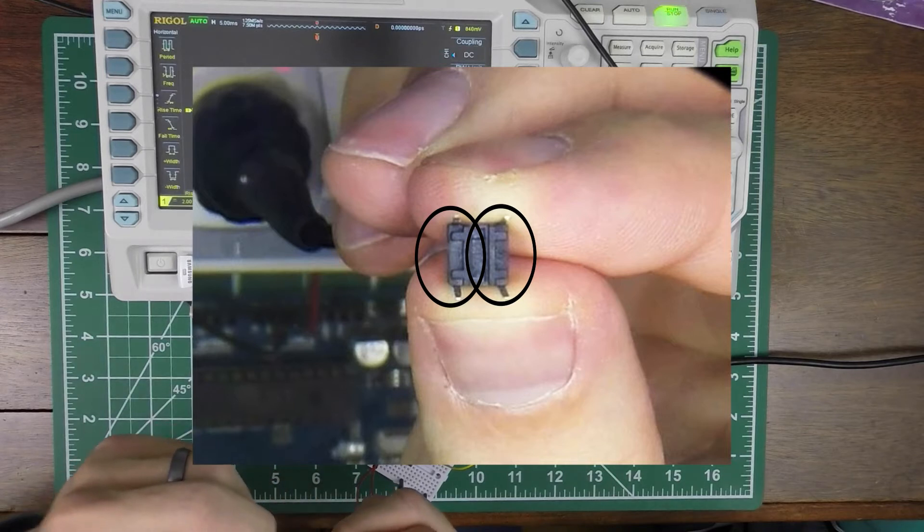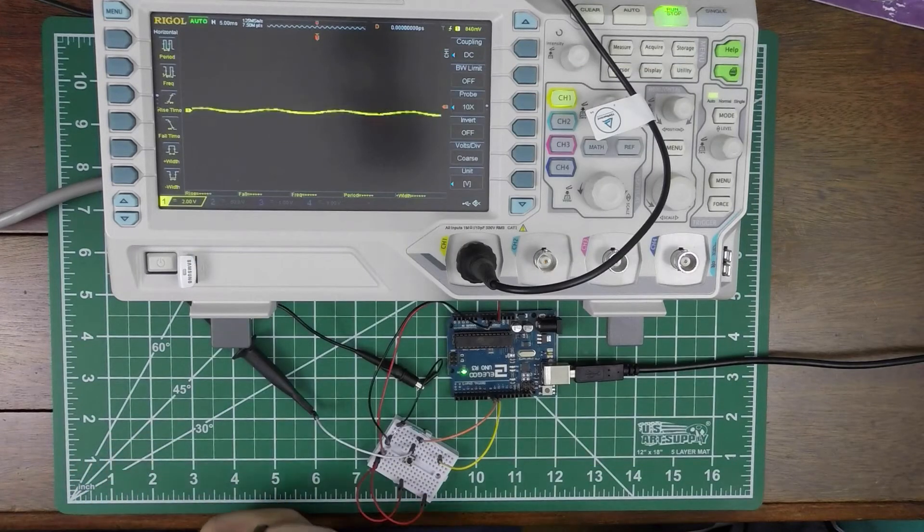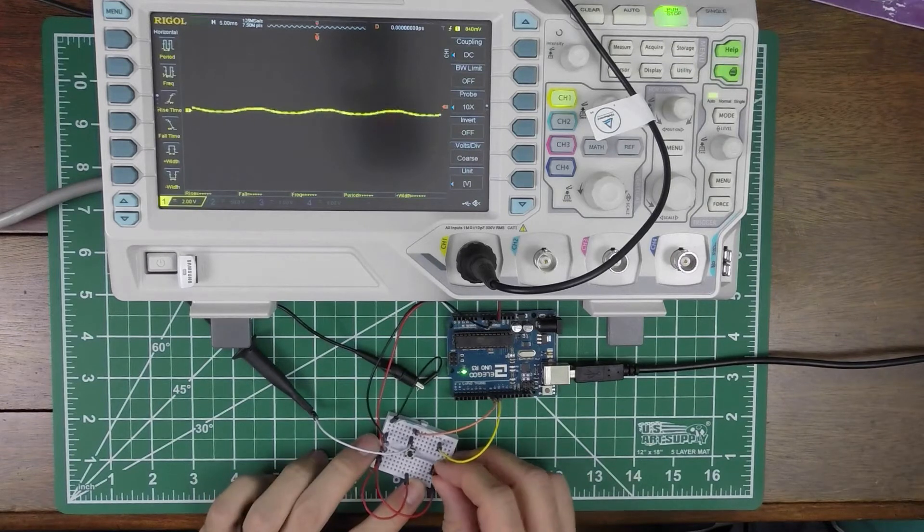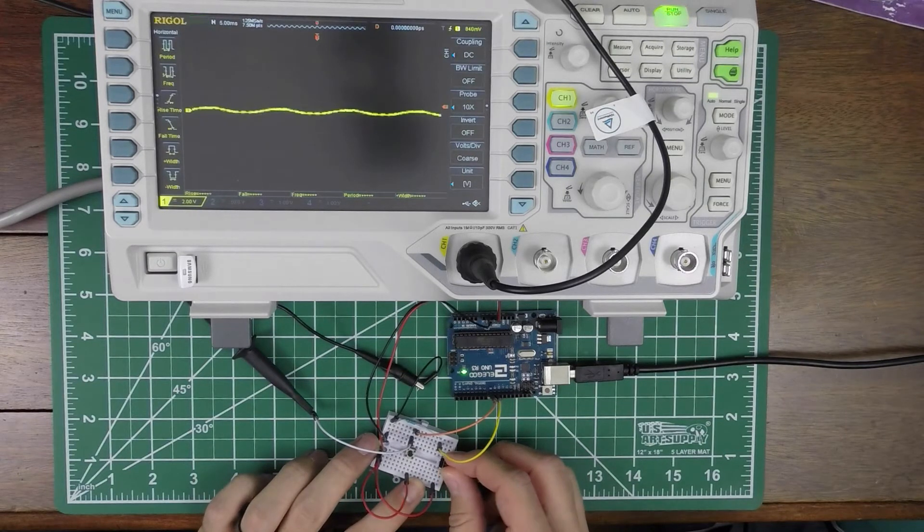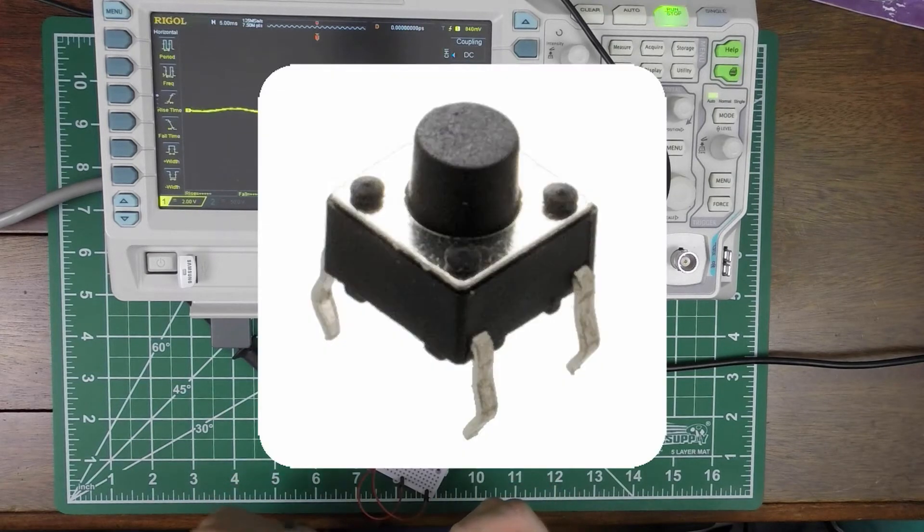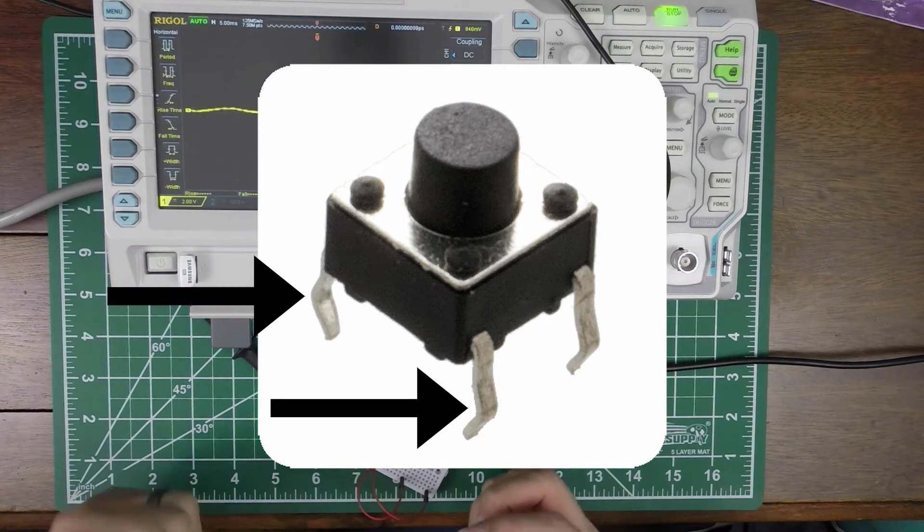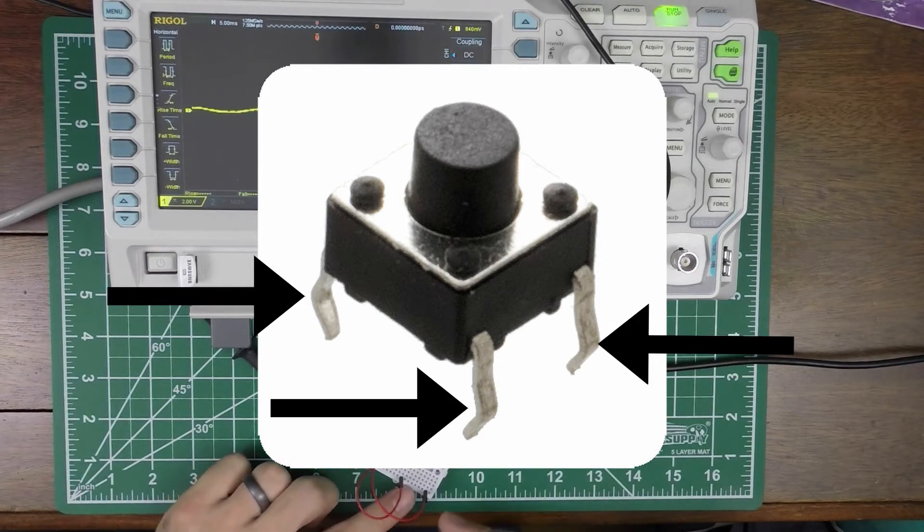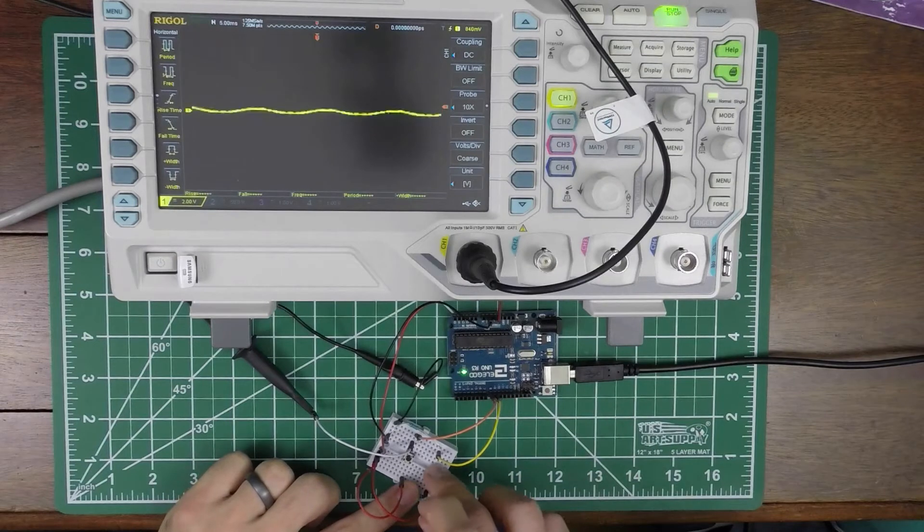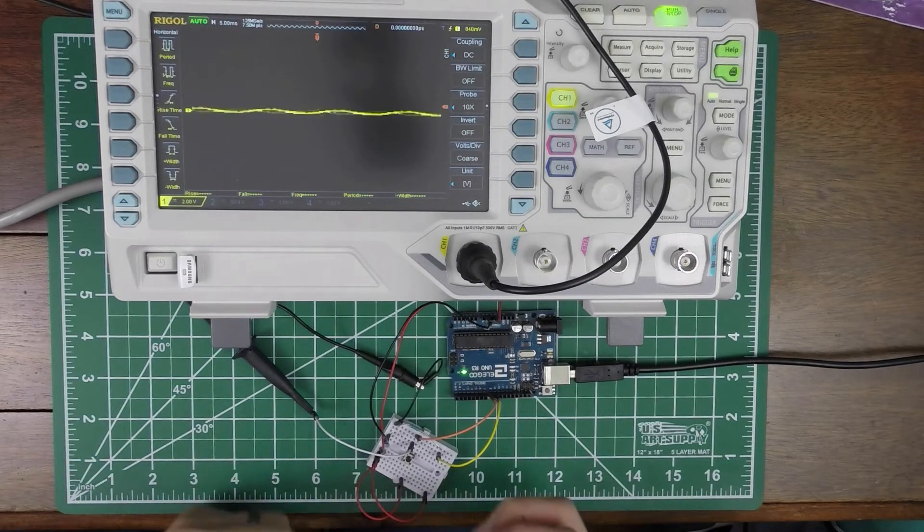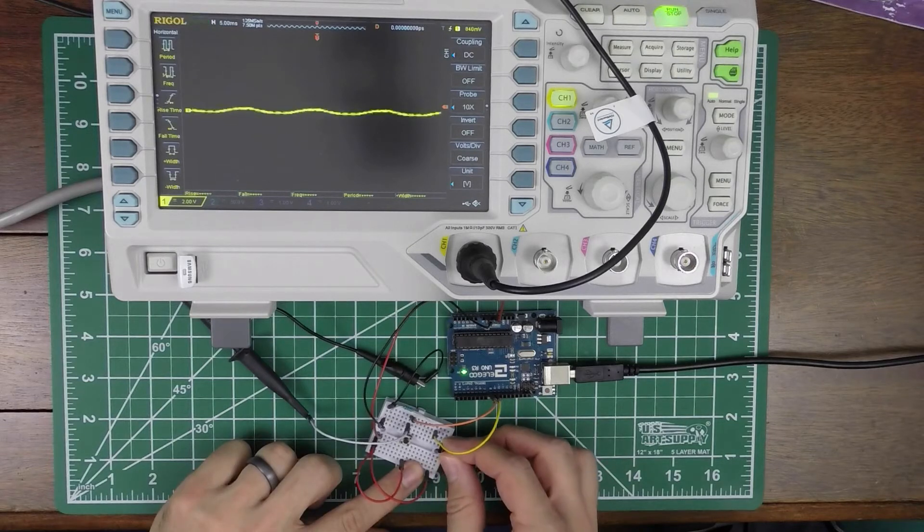So since I want to go from here to here, I want those on different lines on my breadboard. And just a note, when you get this button new, these pins will kind of be bent. It's helpful if you take a pair of pliers and straighten them out. It's already hard enough for these to plug into the breadboard, but when the pins are curved, it's even more difficult. So I'm going to plug this in here.